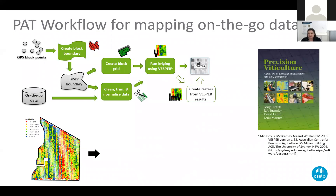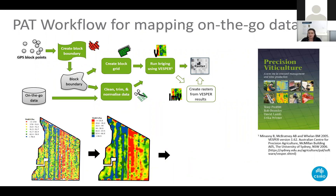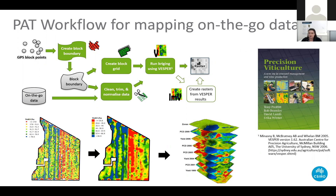PAT contains a core workflow for converting on-the-go data like EM38 or yield into correctly interpolated maps using well-established protocols. This core workflow encourages the user to correctly clean data and to establish a base grid for all analysis. It also includes tools for many other elements of PA analysis.